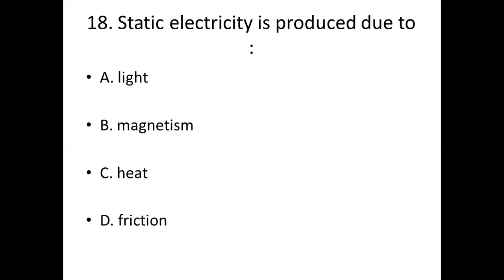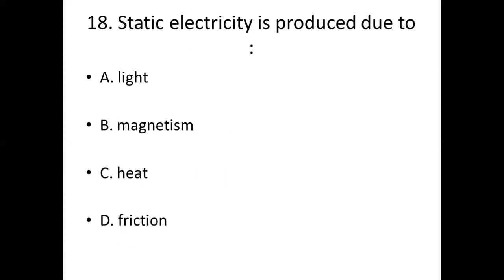Eighteenth bit. Static electricity is produced due to: Option A, light. Option B, magnetism. Option C, heat. Option D, friction. Answer: Option D, friction.